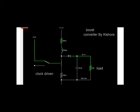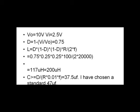The capacitor value is calculated using this formula for 1% ripple. C is greater than or equal to D divided by (1 times 0.01), which is 1% ripple, times F. So we get 37.5 microfarad. I have chosen a standard 47 microfarad capacitor which is available in the market.